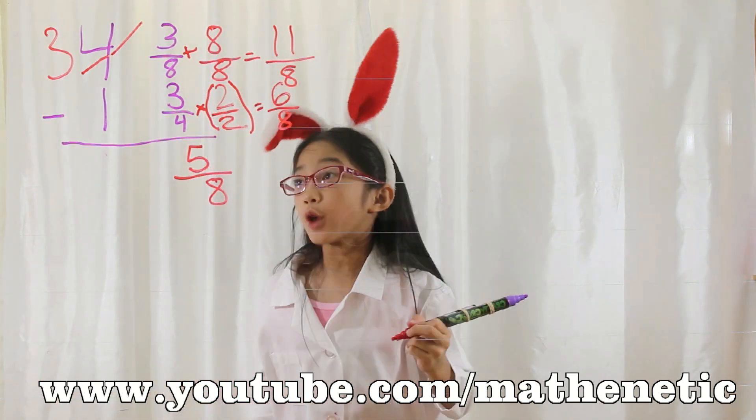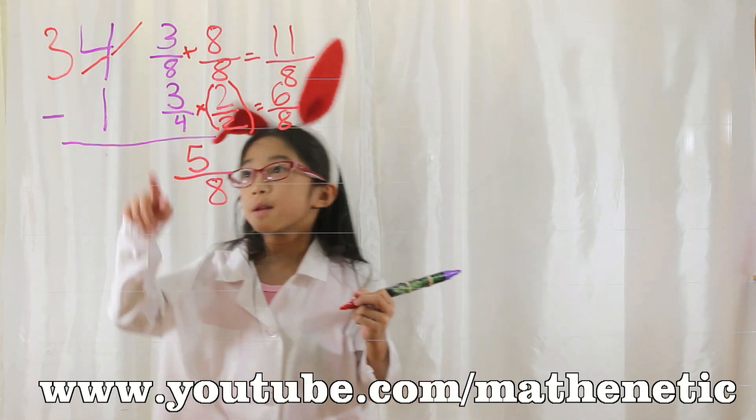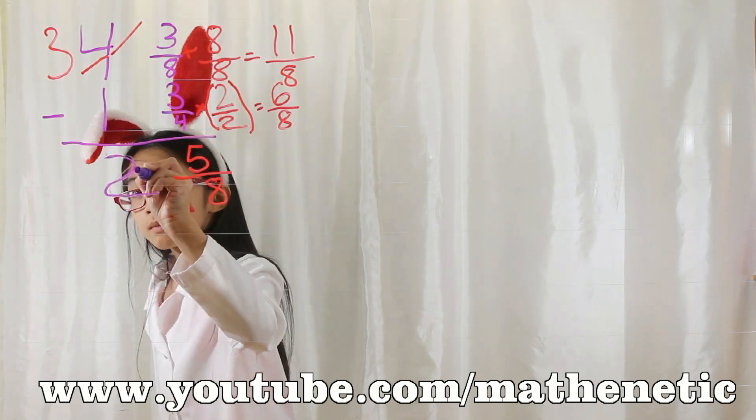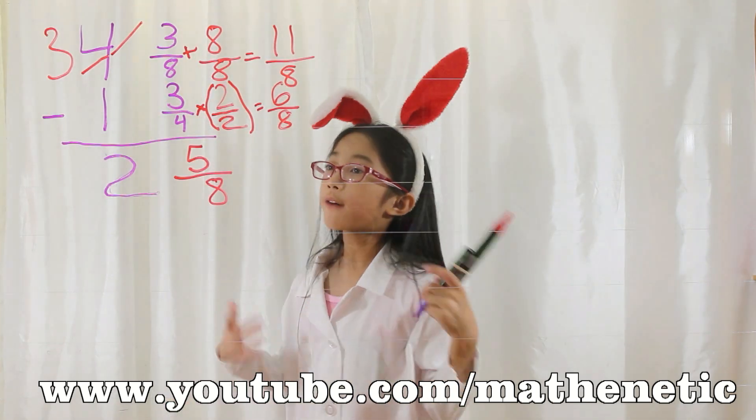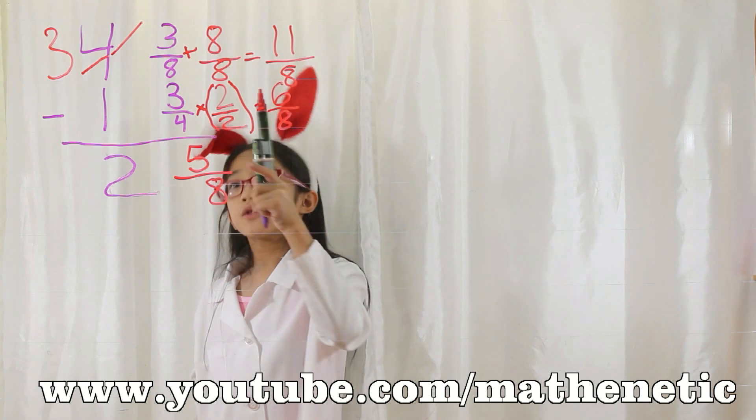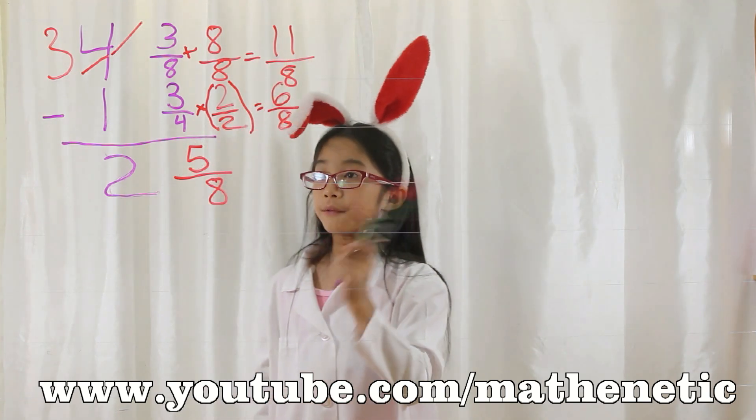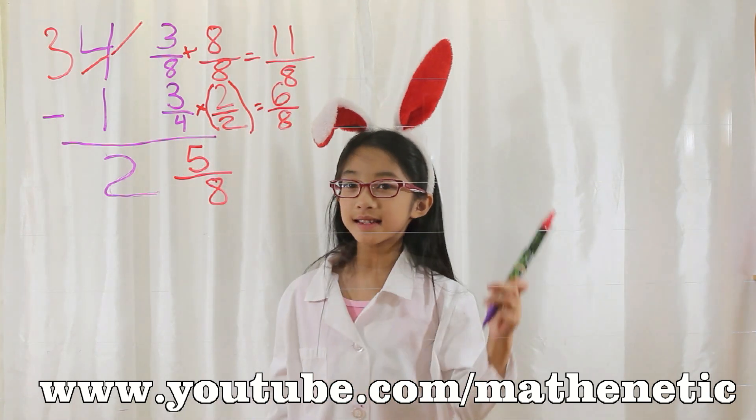But wait a minute. What about the whole numbers? We subtract 3 minus 1, which is 2. We have 2 and 5 eighths. 4 and 3 eighths minus 1 and 3 fourths equals 2 and 5 eighths.